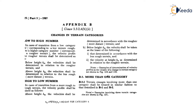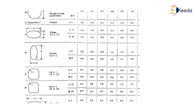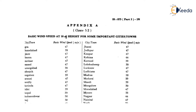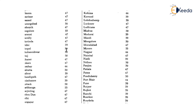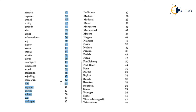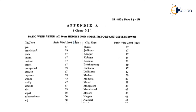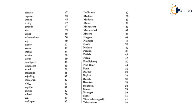What is the basic wind speed of your city? You have to find it from a table: basic wind speed at 10-meter height for some important cities and towns. For example, I am designing my building at Delhi. The basic wind speed for Delhi is 47 meters per second.